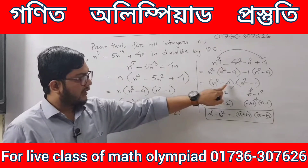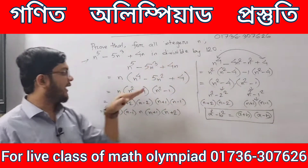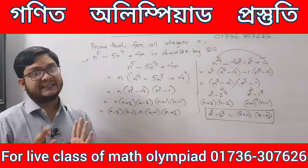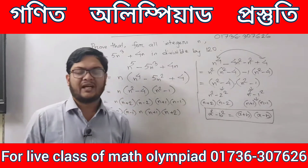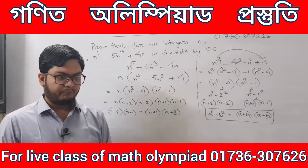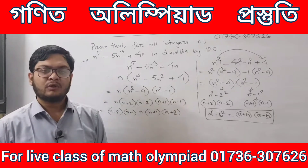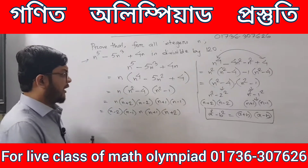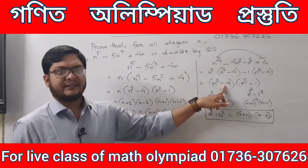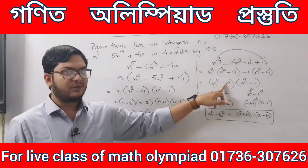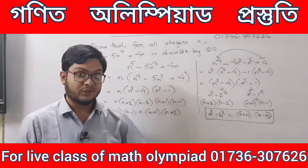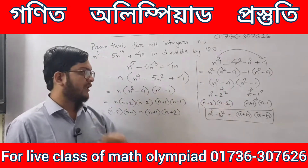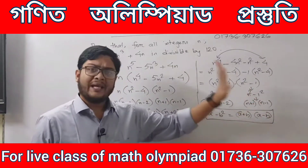In terms of 5 consecutive integers, the difference between consecutive terms is 1. The expression gives us n minus 2, n minus 1, n, n plus 1, n plus 2. When we do n square minus 2 square, we get n plus 2 into n minus 2. When we do n square minus 1 square, we get n plus 1 into n minus 1.